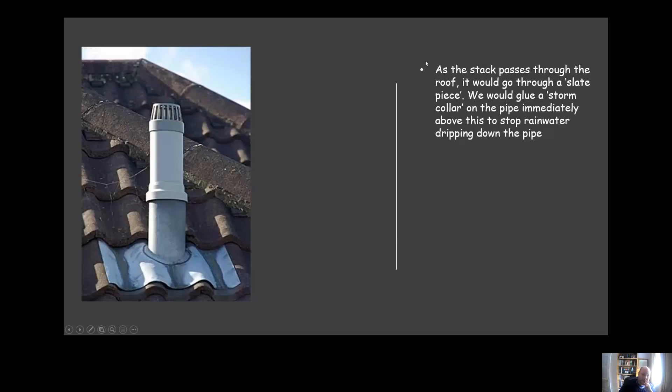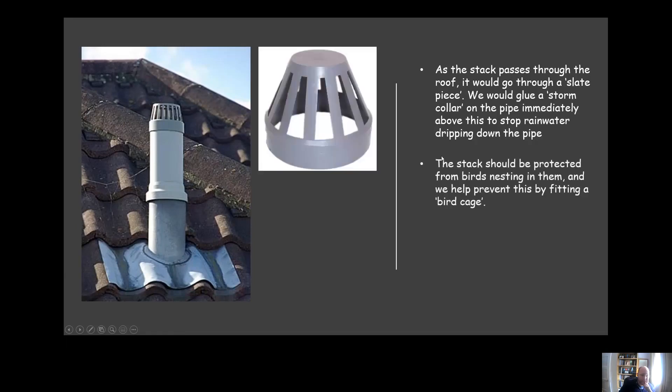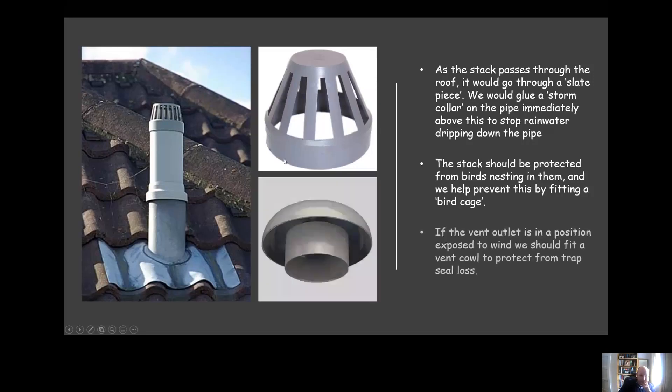As the stack passes through the roof, it would normally go through a slate piece and would normally also have a storm collar on the pipe immediately above this to stop rainwater dripping down the pipe. You'd prevent birds from nesting in there by fitting a bird cage or a wire or mesh or plastic cage. And if it was in an area that was exposed to high wind, we might fit a vent cowl, which can prevent waving out due to the wind blowing over the end of the pipe, which is another type of trap seal loss.